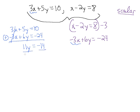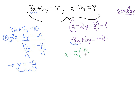We can divide both sides by 11 to solve for y, and we get y equals minus 14 elevenths. We have one value for one of our variables, and we can plug it into either equation to find the other. The second equation just has x by itself, so let's use that: x minus 2 times y, which is minus 14 elevenths, equals 8.